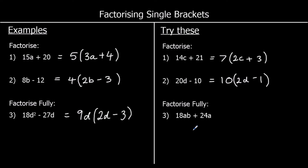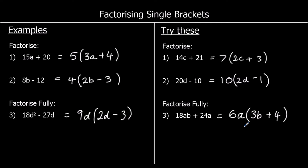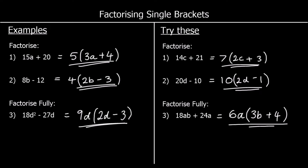Question 3: factorise fully. We've got 18ab plus 24a. So 18 and 24 — the biggest times table they're both in is the 6 times table. And ab and a have both got an a in them, so we can take 6a outside the brackets. 6a times 3b makes 18ab — 6 times 3 is 18 and a times b makes ab. And 6a times 4 makes 24a, and it's a positive 4, so we write plus 4.